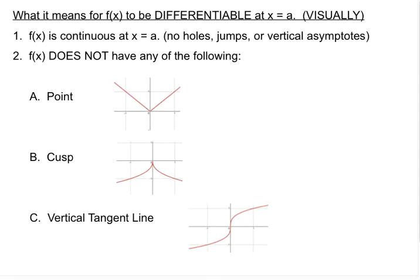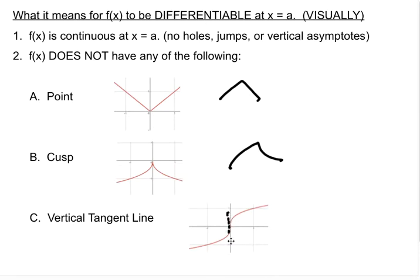Secondly, a function does not have any of the following: a point — meaning something physically pointy like you'd see in an absolute value — a cusp, which kind of looks like a wave shape, or a vertical tangent line. Those are the three visual cues that a function could be continuous but not differentiable.